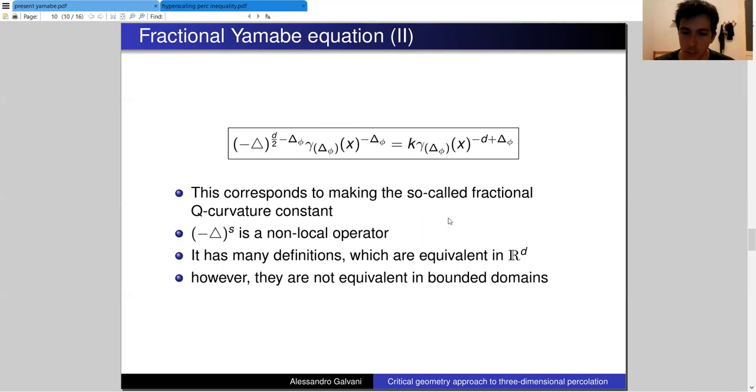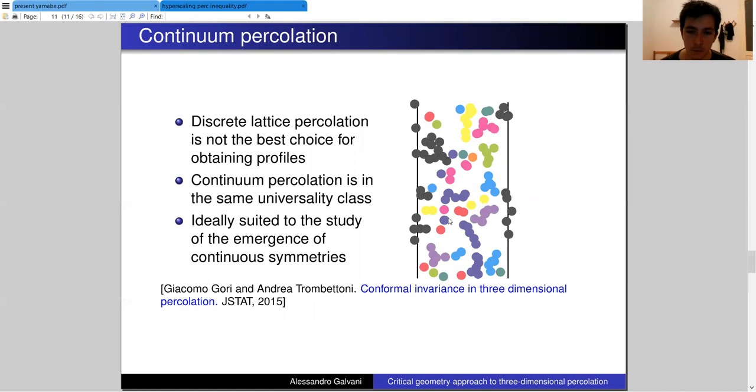There are some ways to solve this equation in bounded domains. Once we have the solution for this equation, we can use it to compute the correlation functions. In particular, what we are interested in is the case of three-dimensional percolation. The model which is best suited for our interest is one in which the elements are scattered throughout the entire space.